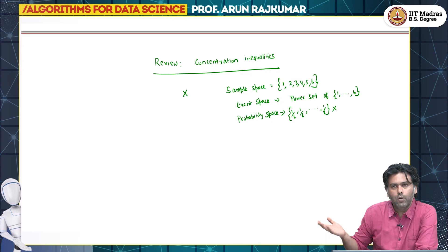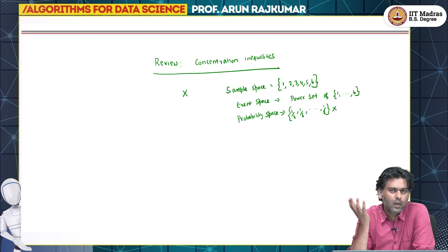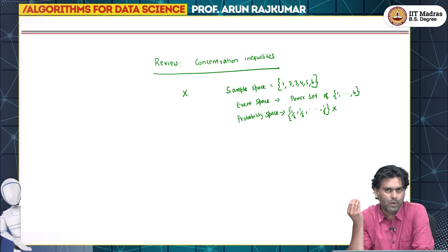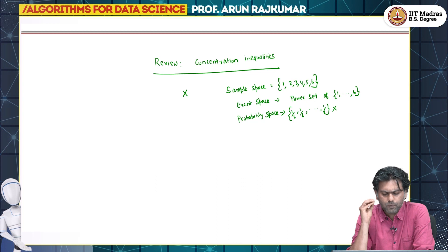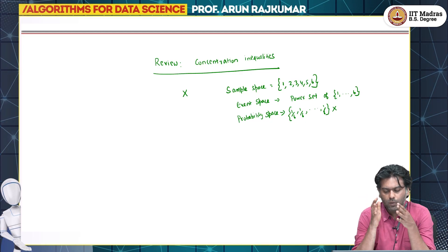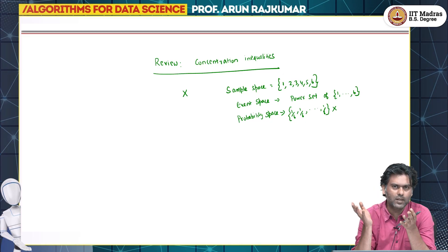This is a discrete variable and I know everything about it. But in real life cases, you might have much less information. For example, you might have only information about the expected value of this random variable. If I do not know everything about it, how can I still make meaningful statements about certain events that might happen? That is the goal of concentration inequalities — to say what we can say about the values a random variable takes if we only have partial information, like its mean or variance.